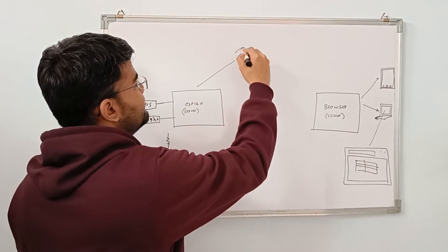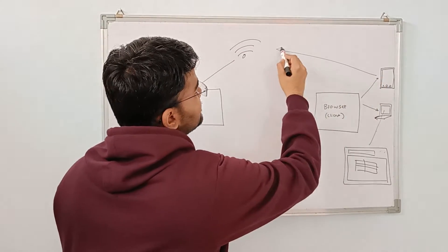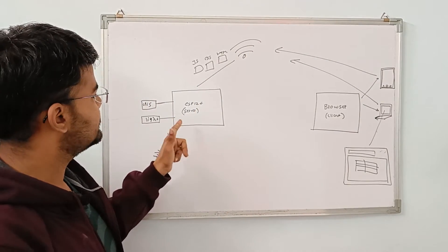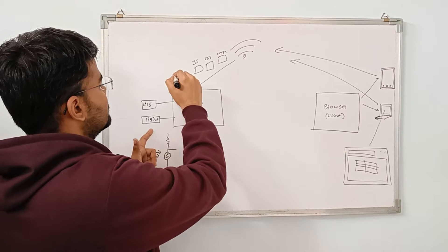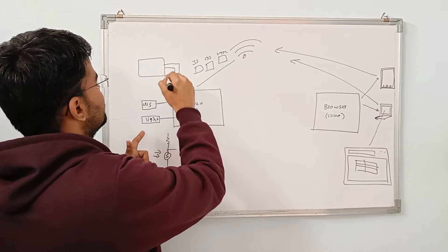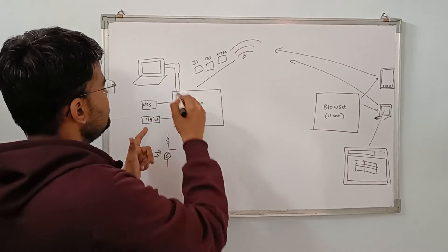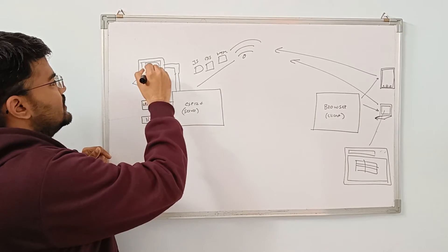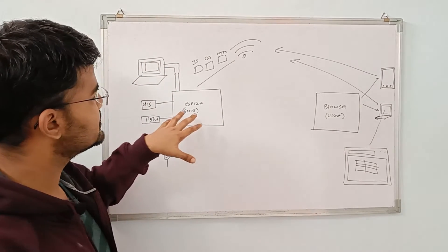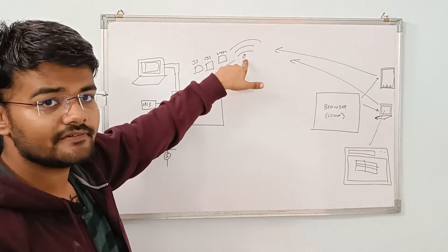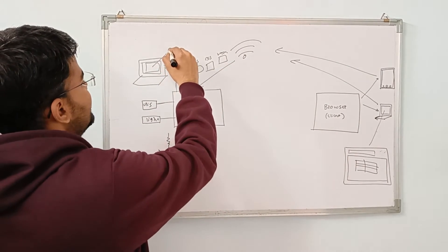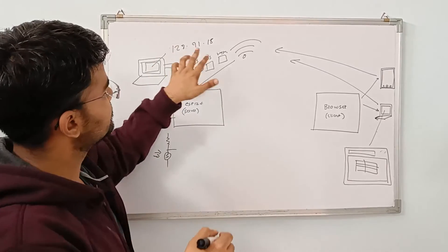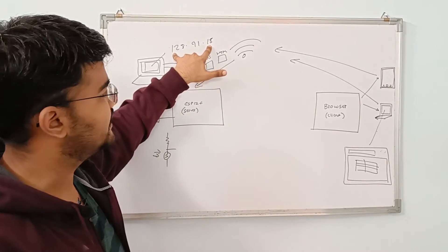The ESP board will be connected to Wi-Fi. The browser and all client devices are connected to the same Wi-Fi network as our server. Initially when there is power on, we are using a USB to our laptop to program this using the Arduino IDE. When the ESP board connects to the Wi-Fi, it will print an IP address on the serial monitor — that IP address is the server's IP address which we are going to copy.